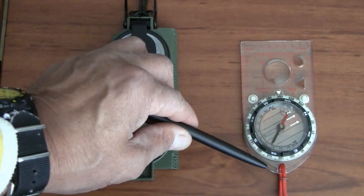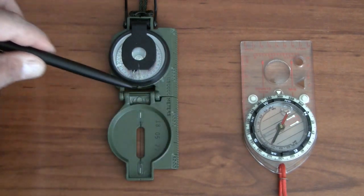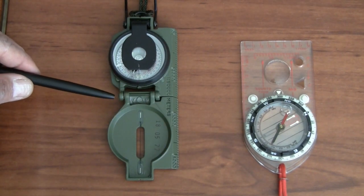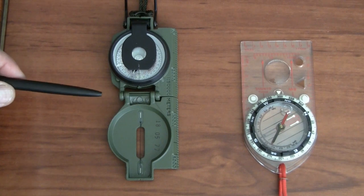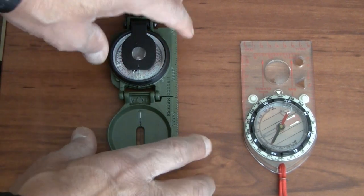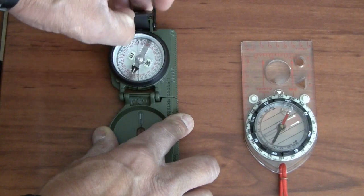So this is a base plate compass. This is a lensatic compass. So let me talk about a couple of things on this. One, as I said, is completely almost indestructible. This is the lens.